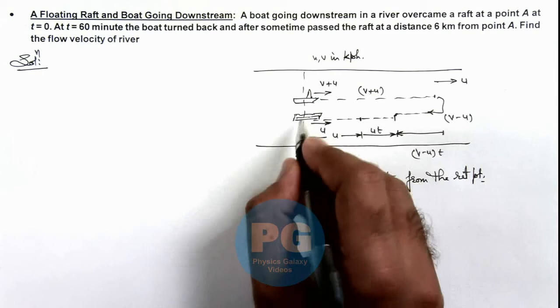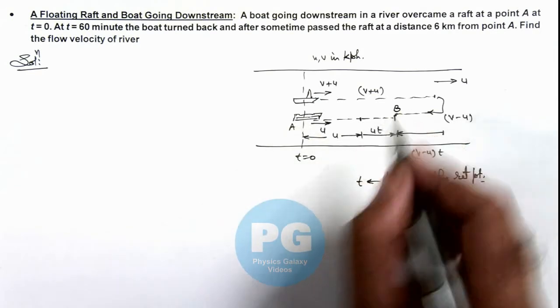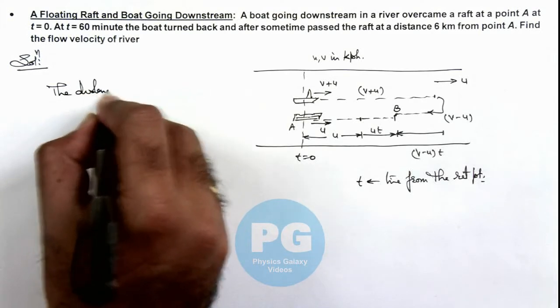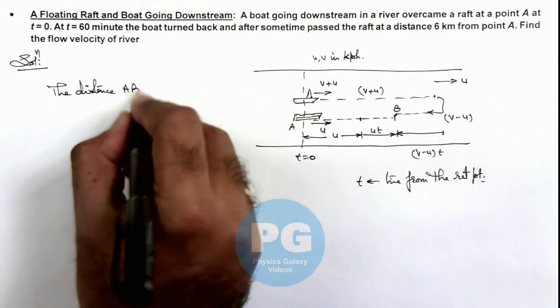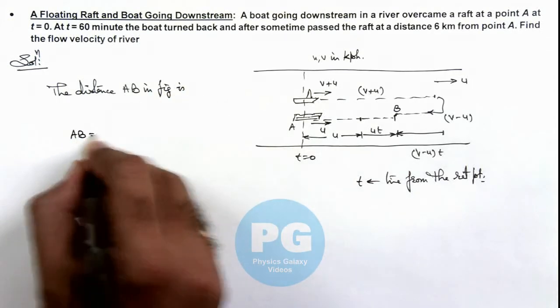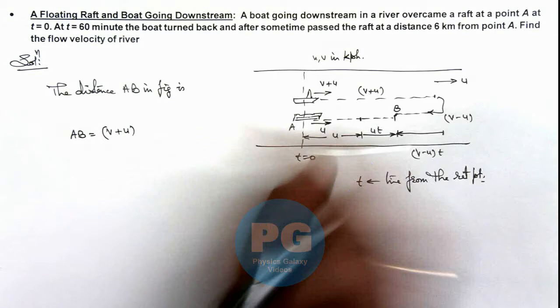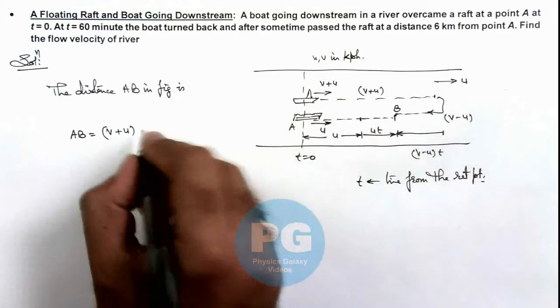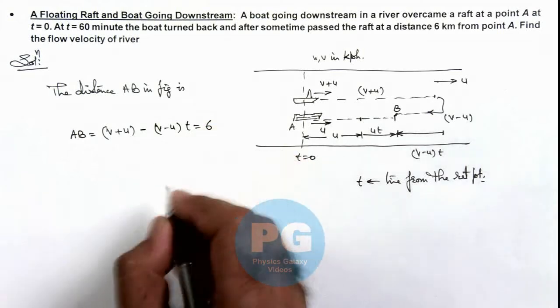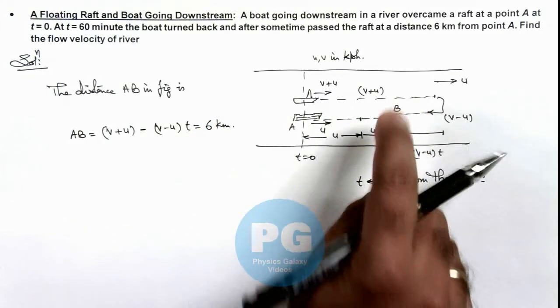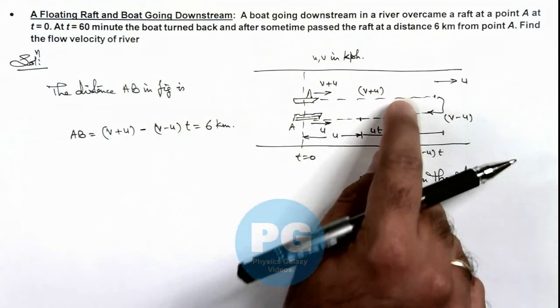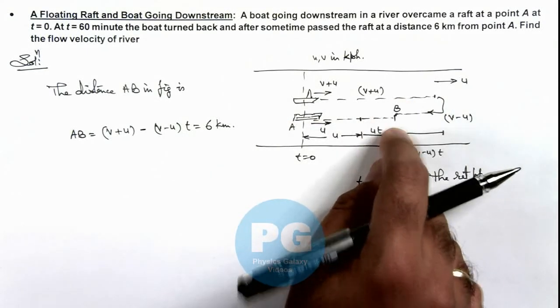If this point is taken as A and this point as B, we can write the distance AB as: v plus u, which is the total distance, minus v minus u multiplied by t. This should equal 6 kilometers, which is already given. It passes the raft at a distance 6 kilometers from point A, that is point B. If we further simplify, you can see what we are getting.